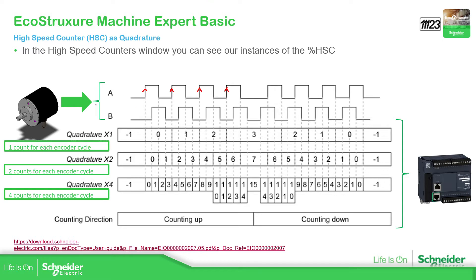For quadrature per two, it takes into account every pulse edge of A — both rising and falling. It also takes into account the direction based on which signal comes first. If A enters before B, it counts up. If B enters first before A, it counts down. That's the only difference compared to pulse and direction.